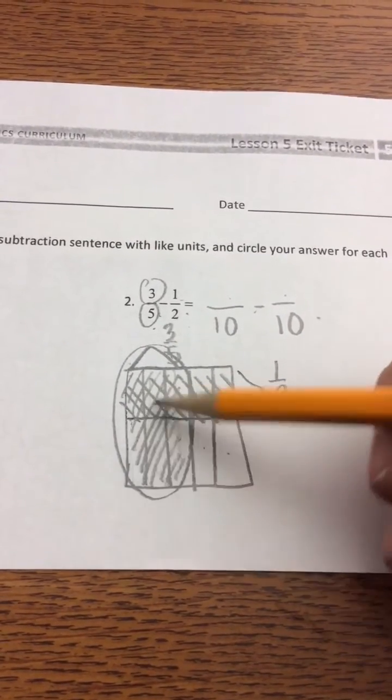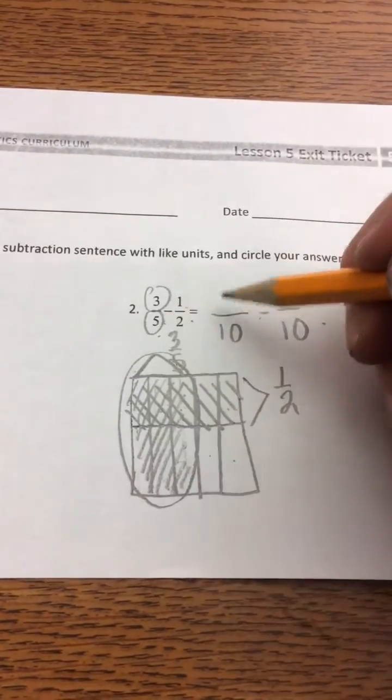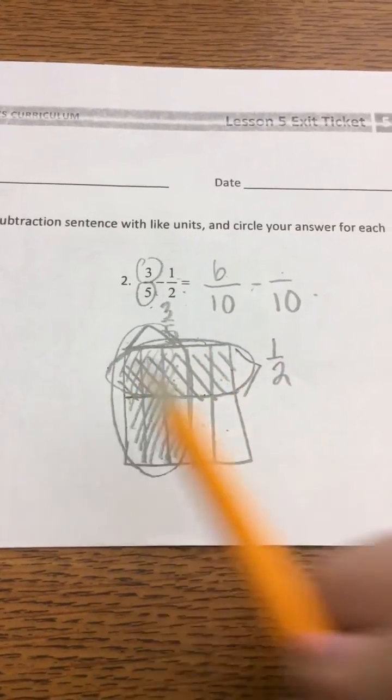In here, I've shaded 1, 2, 3, 4, 5, 6, which means 3/5 is equivalent to 6/10. My 1/2 was the top row here.